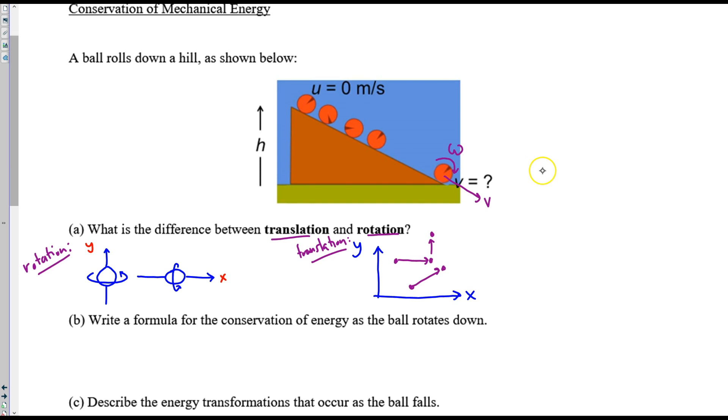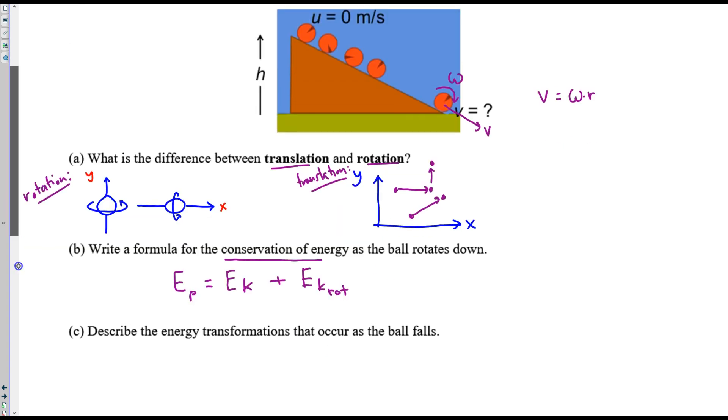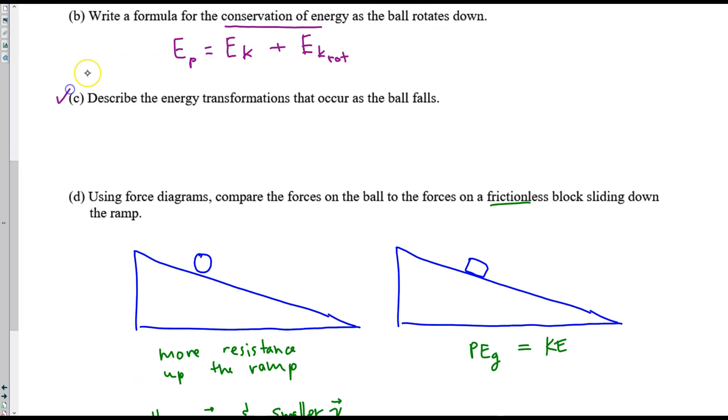At the bottom, the ball is going at a high linear speed. But it's also rotating at some angular speed. And those two speeds are related, right, by this formula. Now, when we're talking about energy conservation, at the top, we just have height. So that's potential energy. At the bottom, we have two types of kinetic energy. There's the regular linear energy, or translational kinetic energy. And then we also have the rotational kinetic energy.